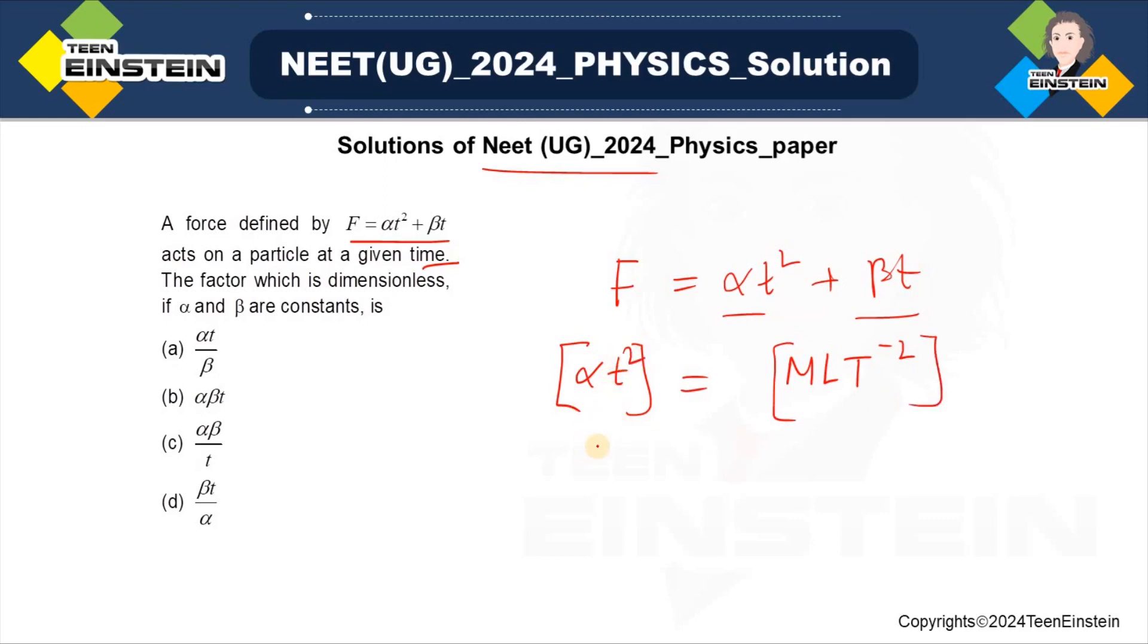Then, what is this alpha? Alpha has dimension ML T to the power minus 4, right? So, this is the dimension of alpha.